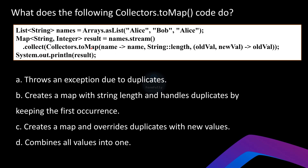The most crucial part of this code is using `Collectors.toMap`. Let's break it down. The first argument is a lambda expression that specifies the key for each entry in the map — here the key is simply the name itself. The second argument is a method reference that specifies the value for each element; in this case the value will be the length of the name — Alice is 5 and Bob is 3.